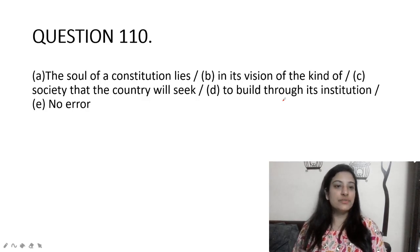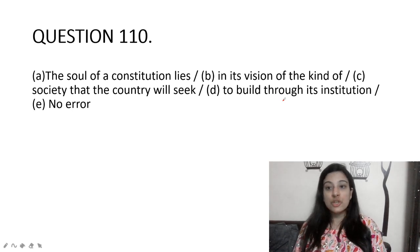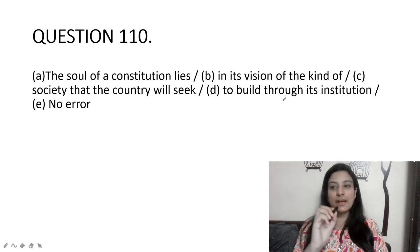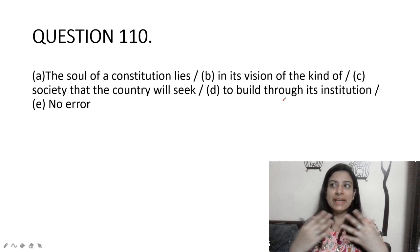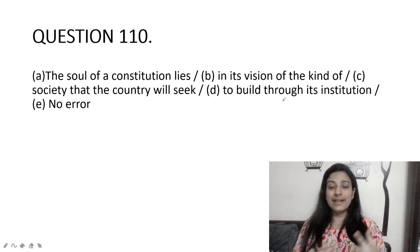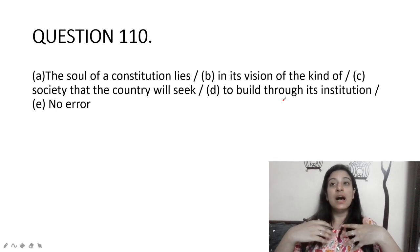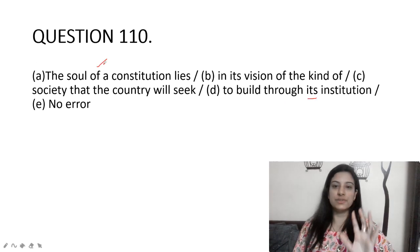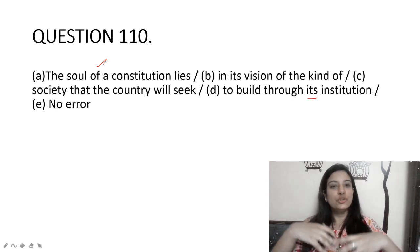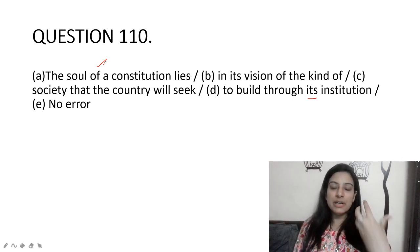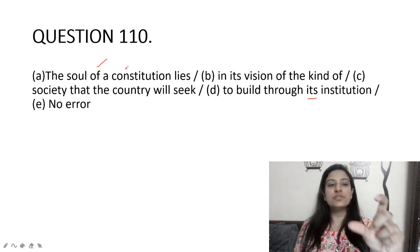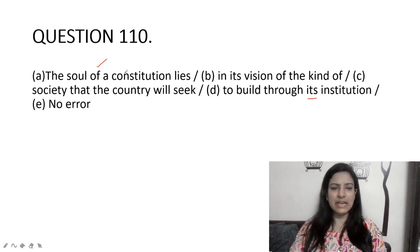The soul of a constitution lies in its vision of the kind of society that the country will seek to build through its institution. There is no error anywhere in this sentence. The meaning: a constitution's core idea lies in its vision of what kind of society a country wants to build through its institutions.